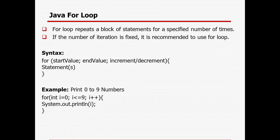So what is the Java for loop? A for loop repeats a block of statements for a specified number of times. In case the number of iterations is fixed, it is recommended to use the for loop. There is a syntax provided: the for keyword, the start value, the end value, then an increment or decrement operator — in case you want to increase or decrease the value — and then the statement.